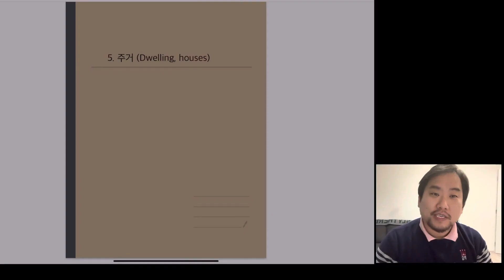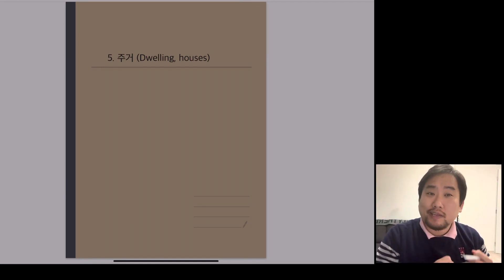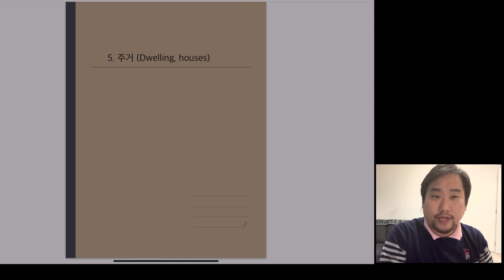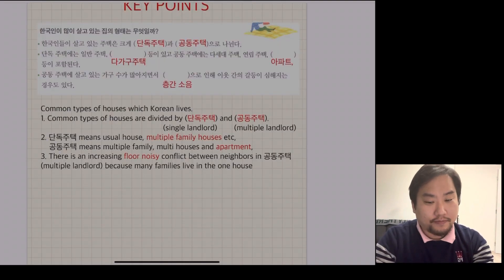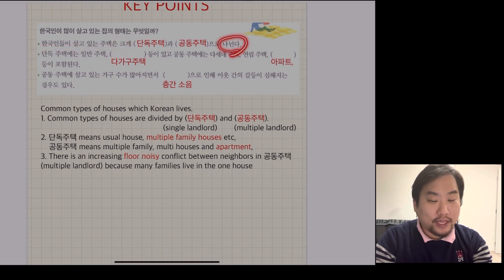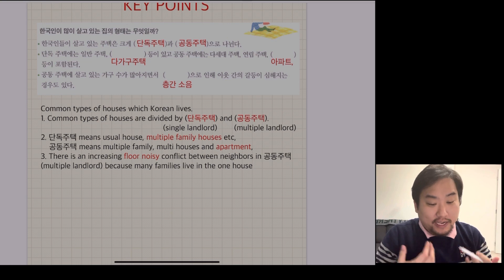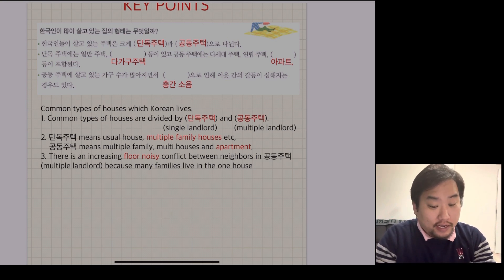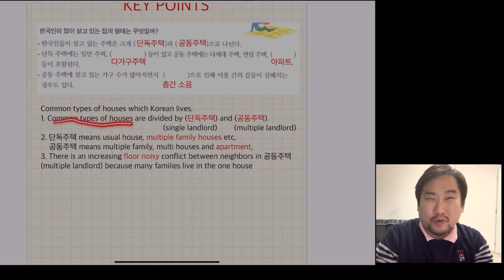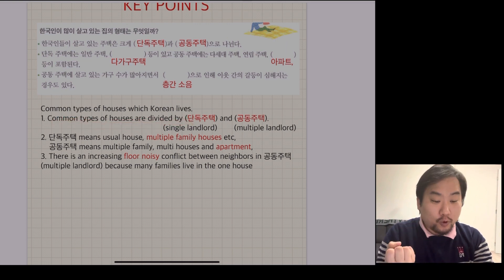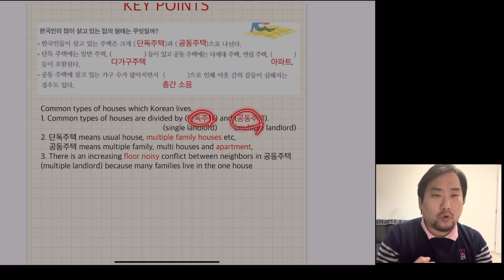So let's deal with the house. Are you ready? Before we start Unit 5, let's quickly check the key points of this unit on dwelling. First point: 한국인들이 살고 있는 주택은 크게 나누다 - it is shared or separate. Common types of houses in Korea are divided into 단독주택 and 공동주택.